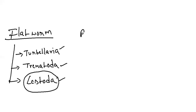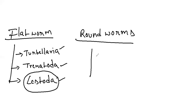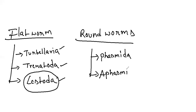For roundworms, you will be having two classes: Phasmida and Aphasmida. Phasmida are the sensory structures present in the caudal end of the worm. If the phasmida is present, we call it Phasmida. If the phasmida is absent, then we call it Aphasmida.